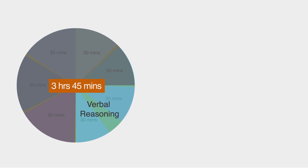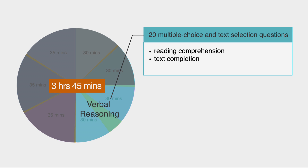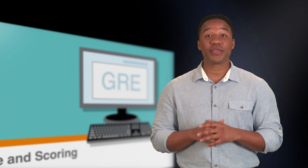Verbal Reasoning is two parts that each last 30 minutes. The 20 multiple choice questions will test you on several passages to test reading comprehension, text completion, and sentence equivalents. I know this is a lot of information to take in, but we'll go over each of these sections in upcoming lessons to strategize and practice. This will get you in your best fighting shape for the GRE.